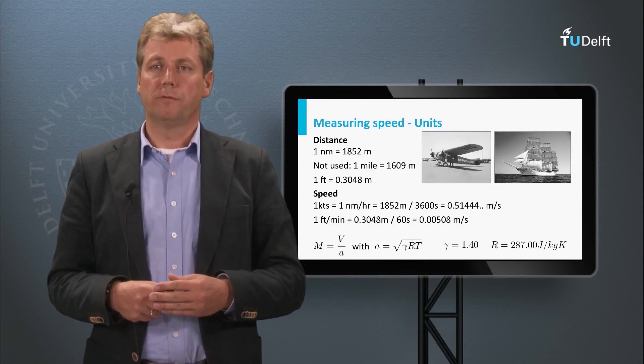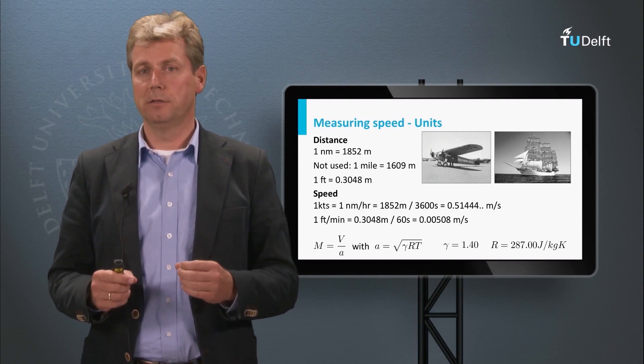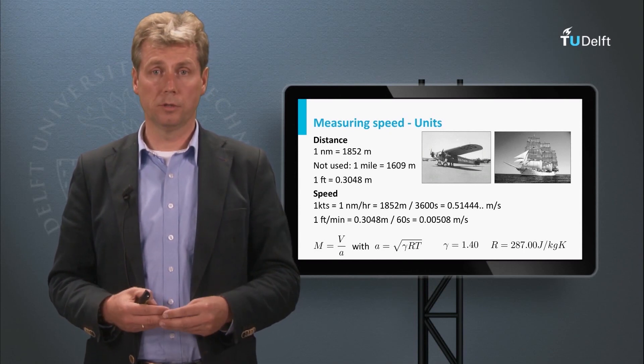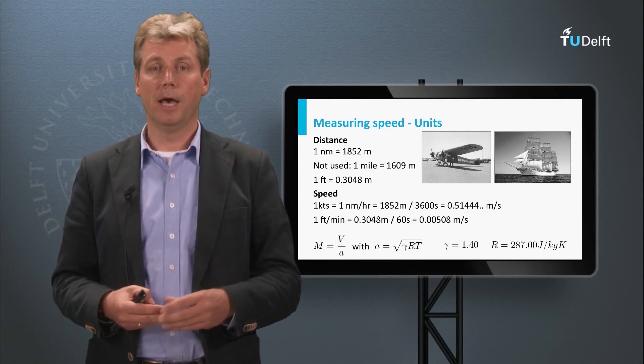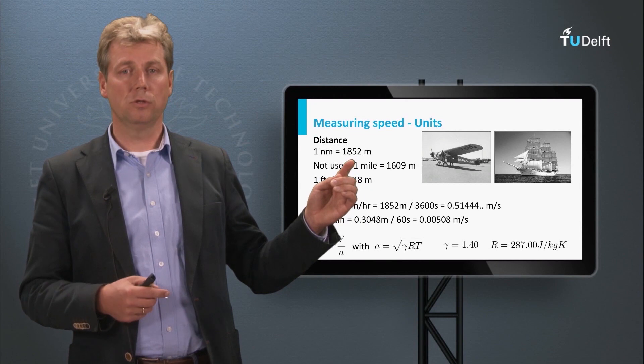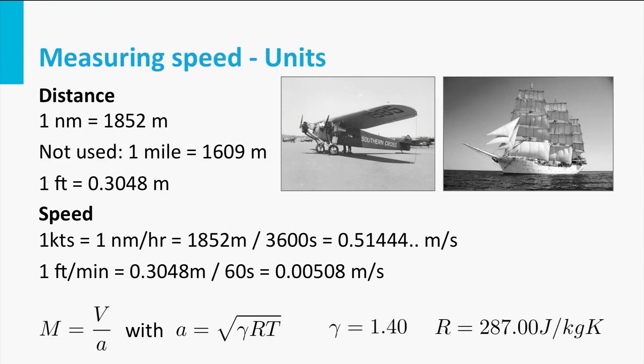Let's have a look at the units first. Originally, navigation in aerospace stems from nautical navigation, the only other way in which we could travel the world before we started to fly. You can still see this in the units. For instance, the unit for distance that is used is the nautical mile, which is close to 2 kilometers - 1.852 meters. Do not confuse this with the imperial mile, or the land mile, which is only 1.6 kilometers on average. In aeronautics, if we talk about miles we always refer to the nautical mile, so 1.852 meters.